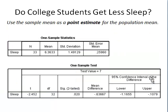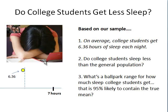Here's our SPSS output. In looking at it, we'll focus on the sample mean of 6.36. So we know now, in terms of our estimate, that on average college students get about 6.36 hours of sleep each night. There may be some error — in fact, there certainly is some error involved — but that's our best estimate based upon our sample.